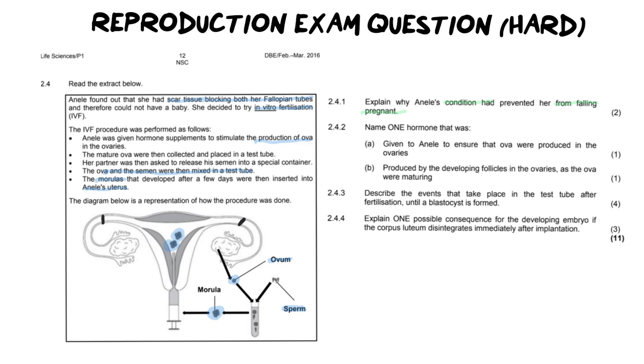So if we are going to explain for two marks what is preventing her from falling pregnant, we're simply going to make a statement and then a reason. So our statement is the fallopian tubes are blocked. And because they are blocked, fertilization cannot take place. You could expand on that further and say things like, a sperm cell and an egg cell cannot meet, they won't be able to meet.